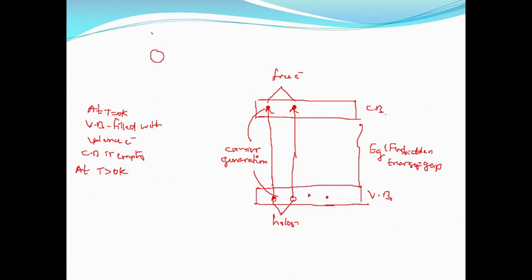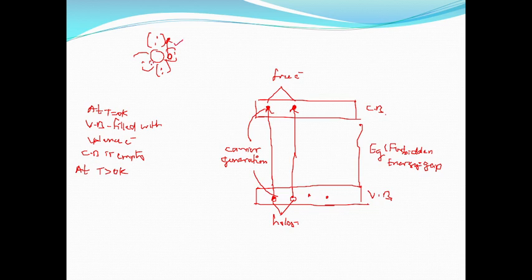If we see the bond structure, the valence electrons are bonded together with covalent bonds. When we supply energy, the covalent bond will be broken and this electron comes out of the bond, leaving holes in the covalent bond. This we call it as carrier generation — this is the explanation based on bond structure.